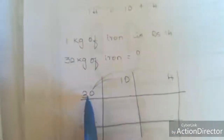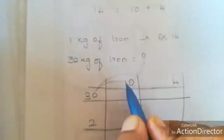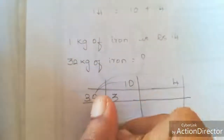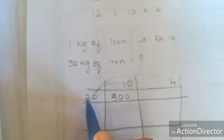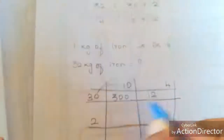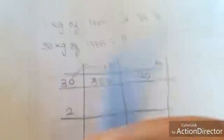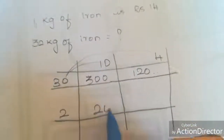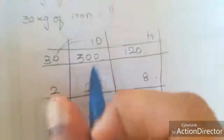First, we have to take row 1 and multiply into the column. For 30: if there is a zero, you just consider the number. 3 ones are 3, then add the 2 zeros. Next, 3 fours are 12, then add the zero. If you completed row 1, jump into the other row. For 2: 2 tens are 20, and 2 fours are 8.